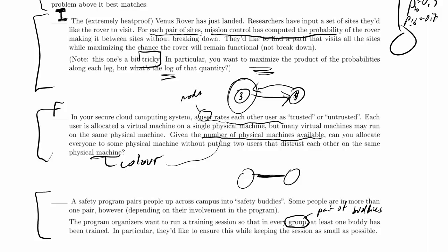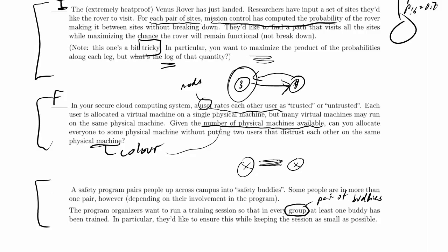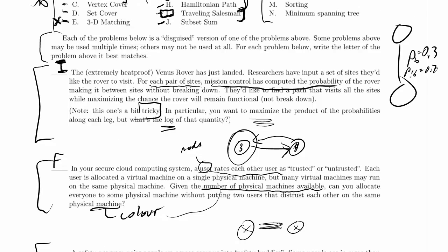So the edge describes a pair, and we want to make sure that either this person or this person in every pair has been trained while training as few people as possible. So this is an undirected graph.